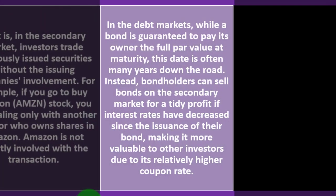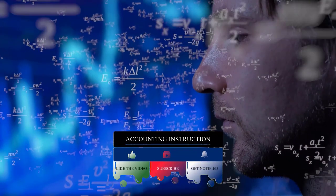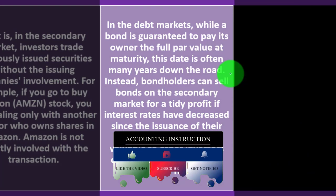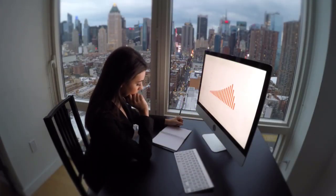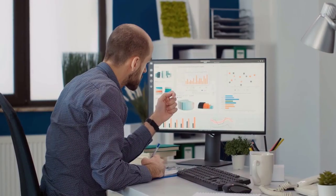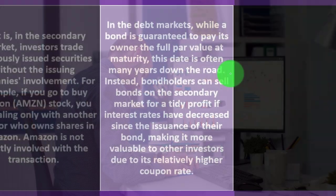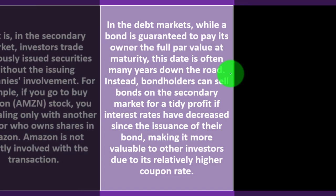In the debt markets, while a bond is guaranteed to pay its owner the full par value at maturity, that date is often many years down the road. With a bond — a debt instrument — the company owes you money. Bondholders can sell bonds on the secondary market for a profit if interest rates have decreased since the issuance of the bond, making it more valuable to other investors due to its relatively higher coupon rate. We'll dive into the relationship between interest rates and bond prices in example problems.